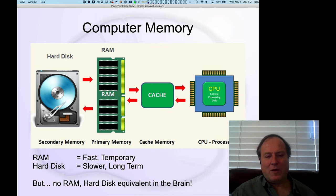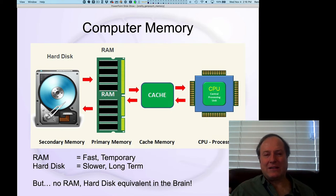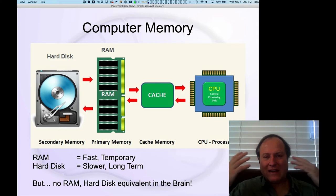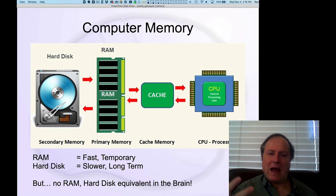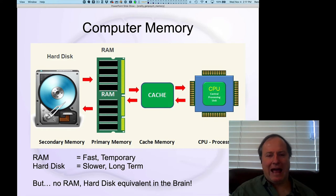But we don't have anything like RAM or a hard disk in our brains. There's nothing functionally equivalent to that in the biology of the brain. So how is it that we could still have this compelling-seeming mapping, and yet not have something like that in our brains?